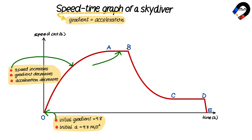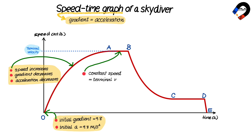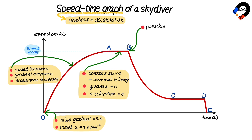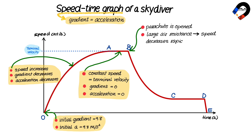Between A and B, the speed is constant and this speed is called terminal velocity. The gradient of the graph is 0, which means that the acceleration is 0. The parachute is opened at point B, because the large air resistance causes the speed to decrease rapidly.